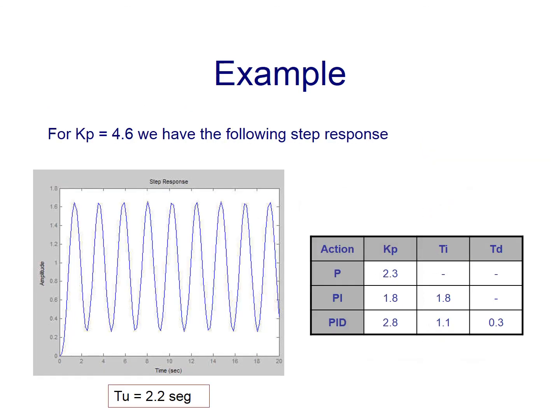If we plot the time response for this value of Kp, for the value for the proportional controller, we have that the oscillating period is 2.2 seconds. So, now we have value for Ku and Tu. And if we apply the rules in the table, then we find that Kp equals to 2.8, Ti equals to 1.1, and Td equals to 0.3.